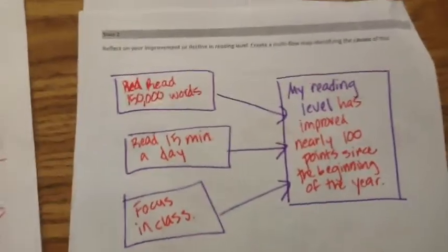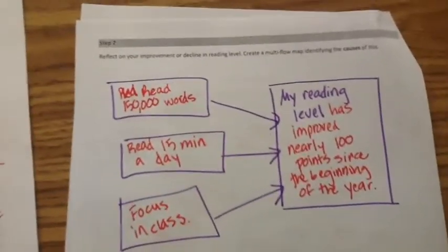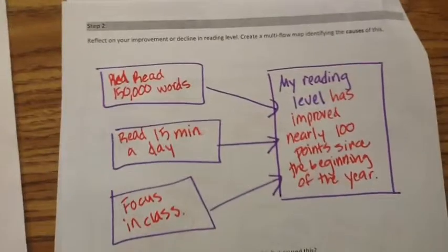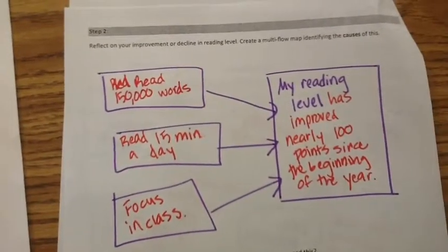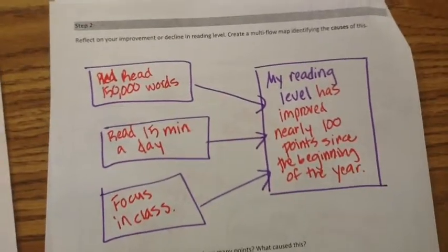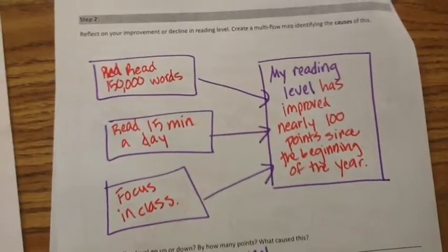Now, your reading level might have gone down, in which case you should be reflecting on why it might have gone down. Perhaps you're not reading enough or you're not reading at home. Maybe your behavior is not appropriate during class. You would want to reflect about the causes for your reading level going down or staying stagnant, which means the same.